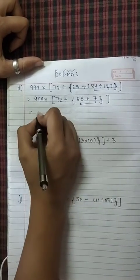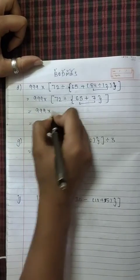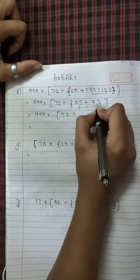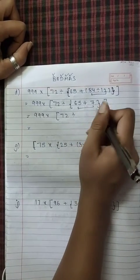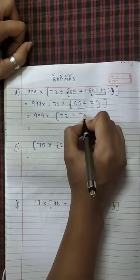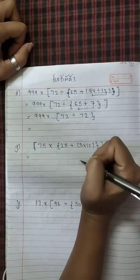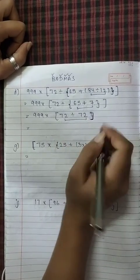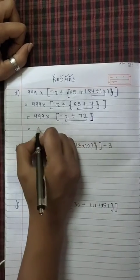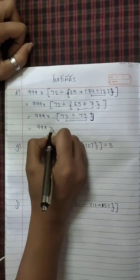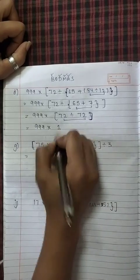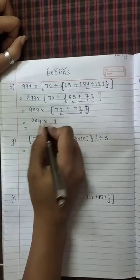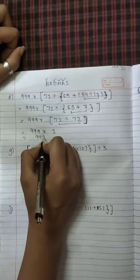Next is the turn of curly bracket. 999 into 72 divided by, now 65 plus 7 is what? 72. This is square bracket. Now last is the turn of what? Square bracket. 72 divided by 72 is what? 1. So in the end what will we have? 999 into 1 is 999.